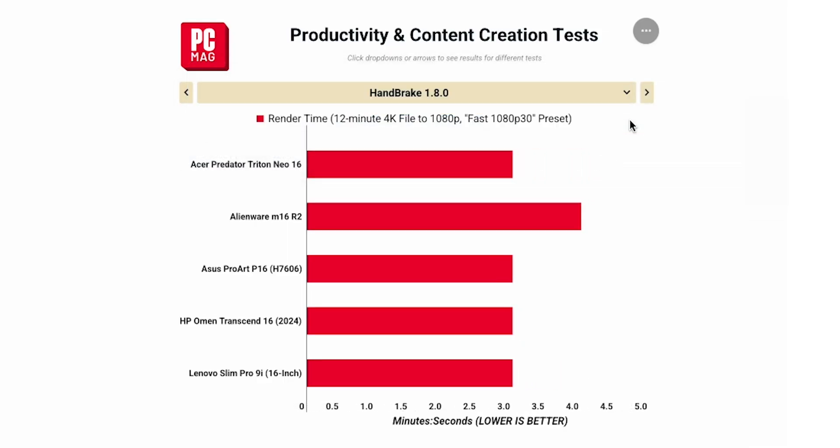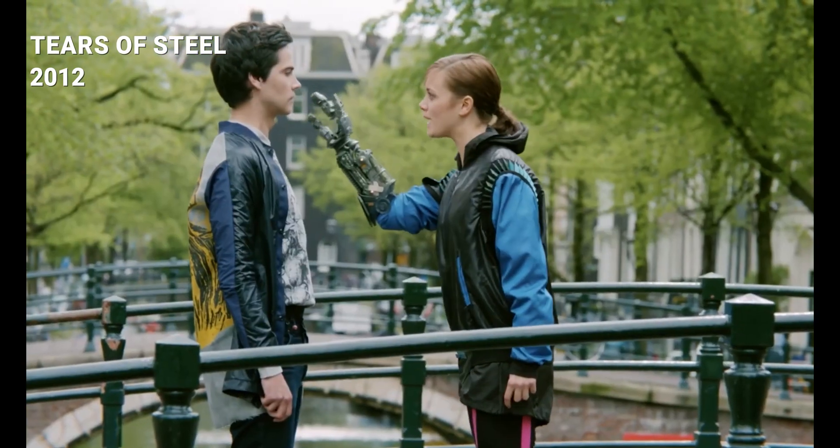Finally, we test video rendering performance with the popular freeware program Handbrake 1.8. Video rendering is one of the most CPU-intensive tests out there. In Handbrake, we encode a 12-minute 4K video into 1080p format — a short movie called Tears of Steel — and we measure how long it takes. Faster times mean better performance. This test also scales very well with more CPU cores and threads, so systems with higher-end processors and adequate cooling will naturally perform better. Like Cinebench and Geekbench, Handbrake is compatible across platforms: x86, Windows on ARM, and Apple Silicon.